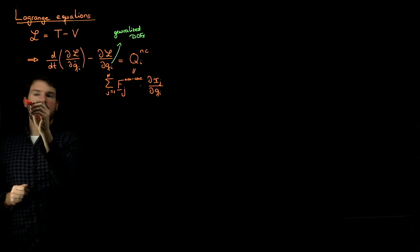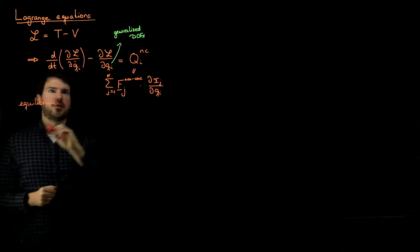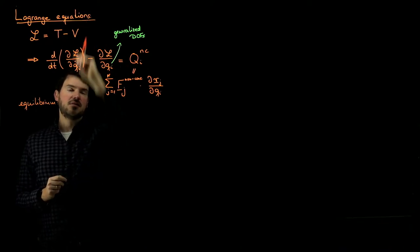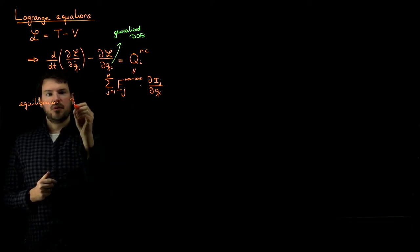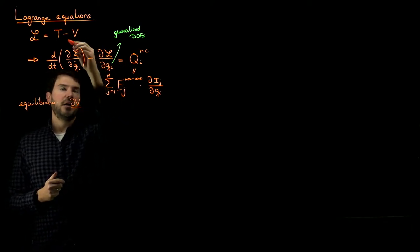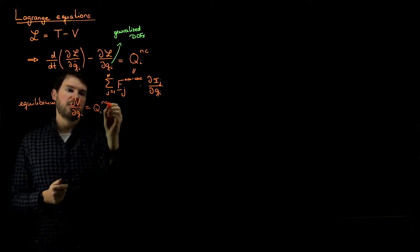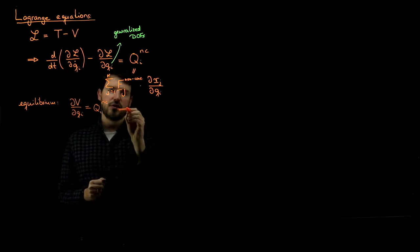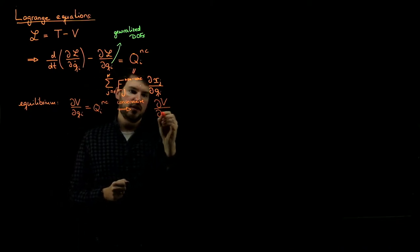There's one special case we also considered: the case of equilibrium. If we are in equilibrium, that means we have no dynamics, which means the kinetic term disappears and T is zero. We end up with something very simple: dV by dq_i equals Q_i non-conservative. This is nothing else but static equilibrium. And if, in addition, we're in a conservative system, then we don't have non-conservative forces, which means dV by dq_i is simply zero.